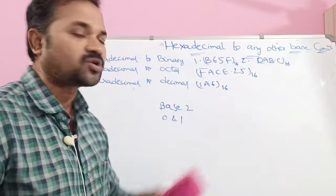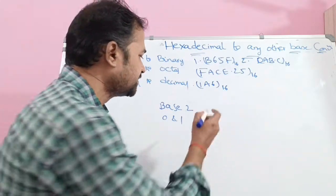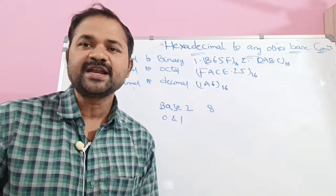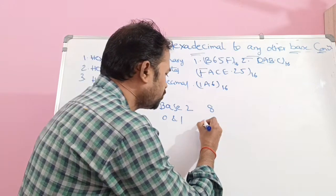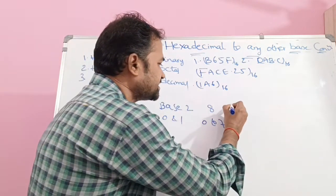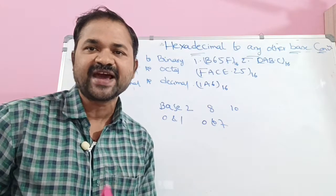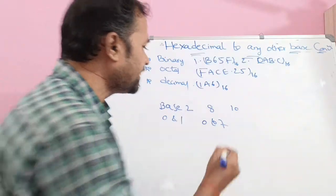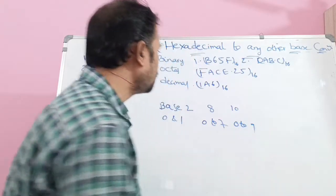The second one is the octal number system. Octal number system means the base value is 8. An octal number system mainly contains 8 symbols from 0 to 7. The third one is the decimal number system. Decimal number system means the base value is 10, and it mainly contains 10 symbols from 0 to 9.